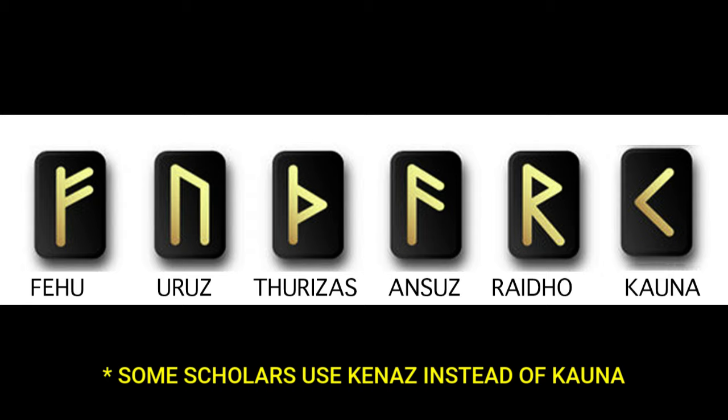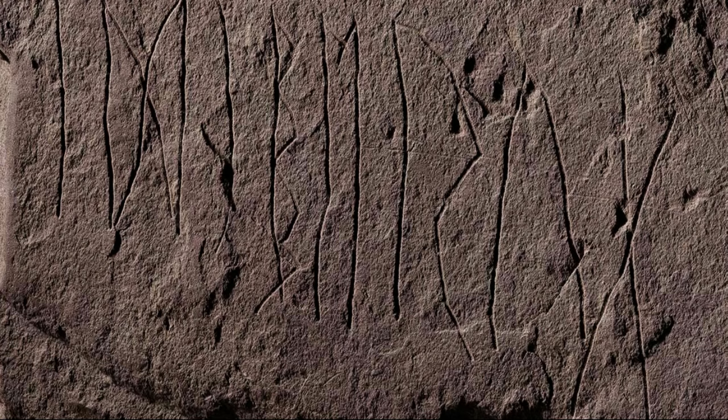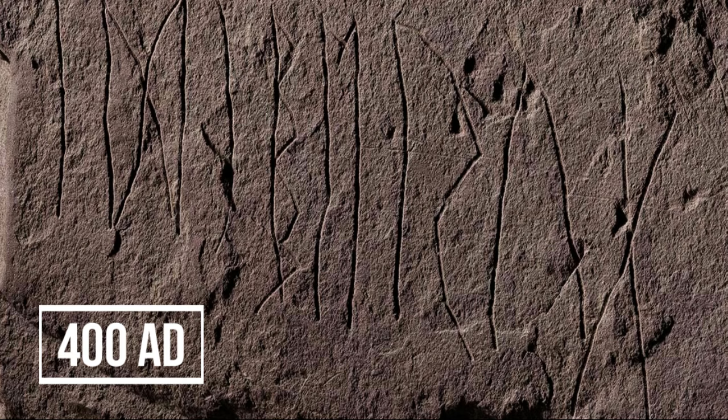The first six runes of the Futhark are: Fehu, Uruz, Thurisaz, Ansuz, Raido, and Kauna. The Elder Futhark, or Older Futhark, is the oldest form of runic alphabet, dated to around 400 AD, and consists of 24 letter runes, each one with its own symbolic meaning and purpose.